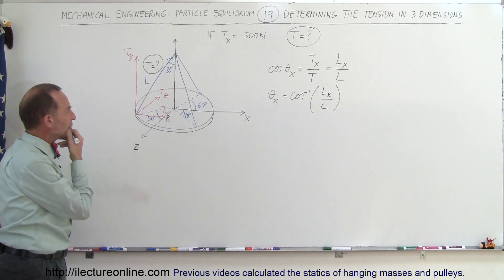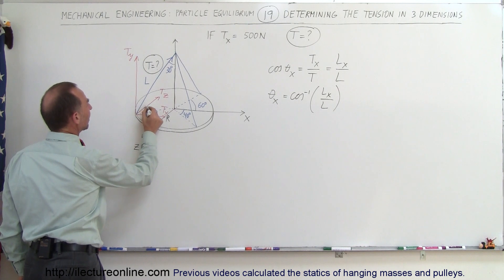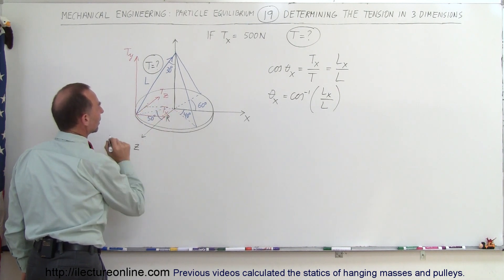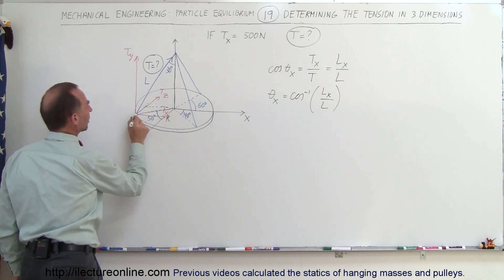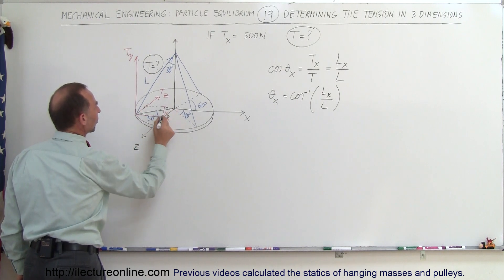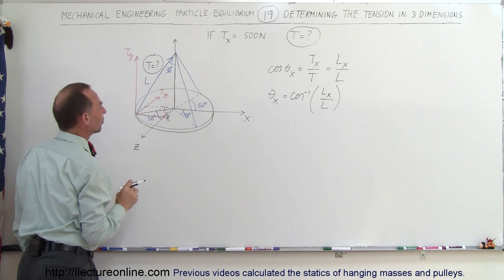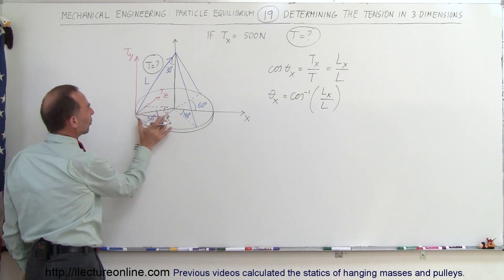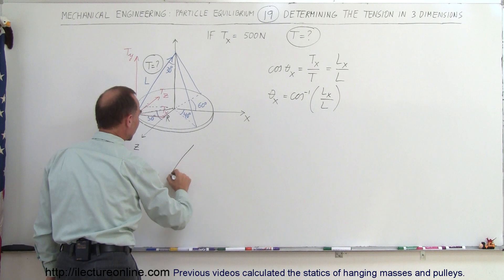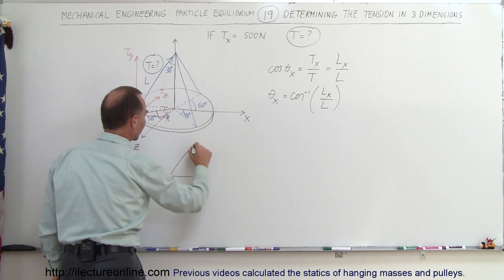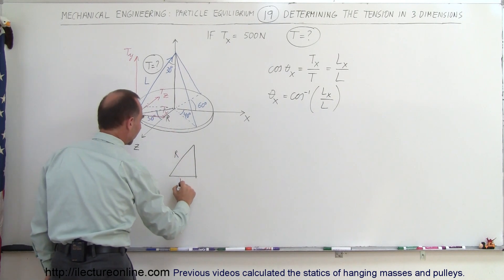To find L in the x direction, we look at this triangle. We have the radius here, the x-component of the length, and another component we don't need. The radius of the circle is R, and this is L sub x.